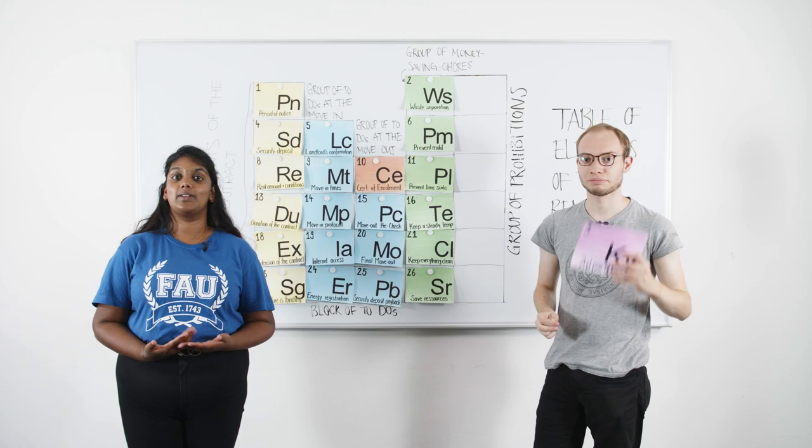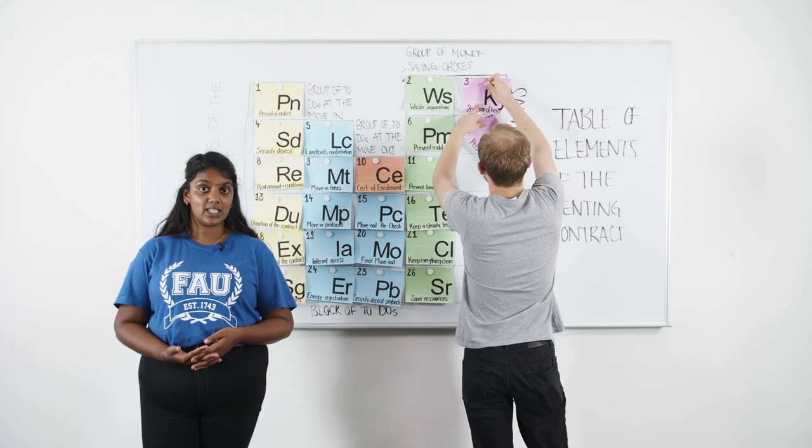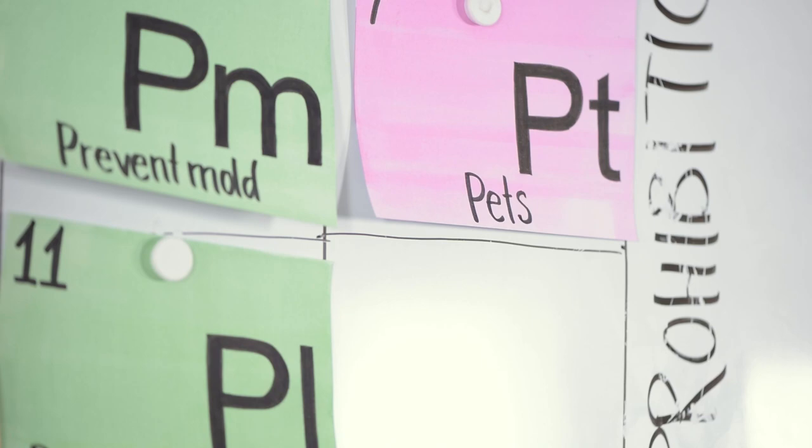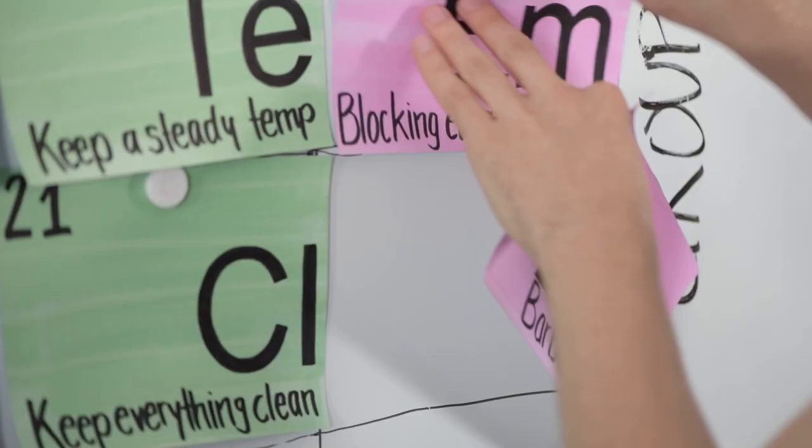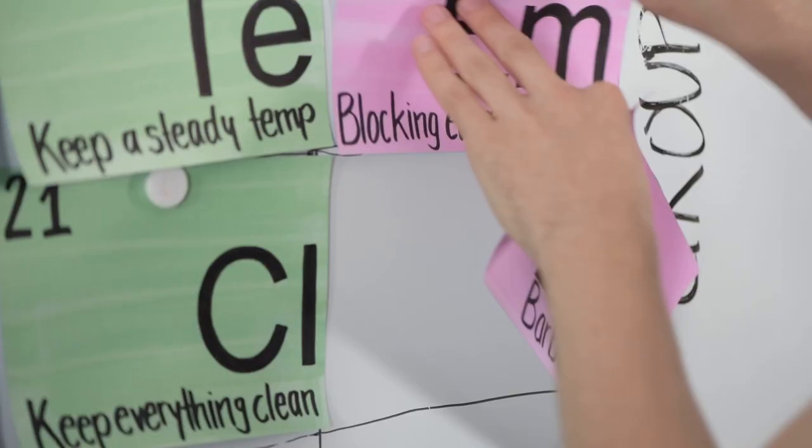Last but not least, the group of prohibitions. We'll get through them real quick. In most accommodations, it's not allowed to get a second pair of keys done, keep pets, sublease your room, block the emergency exit, or have barbecues.